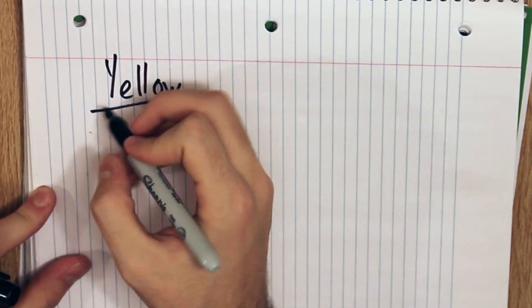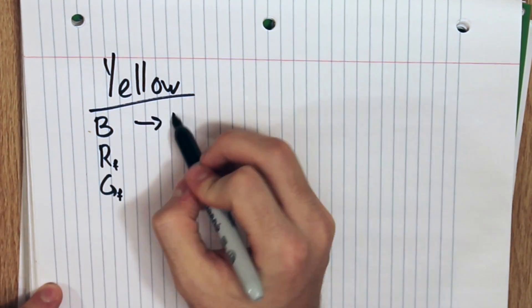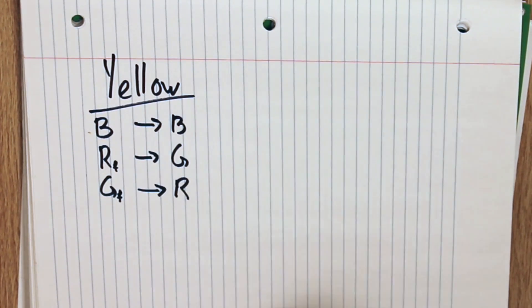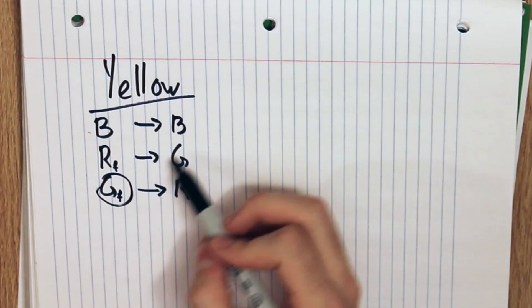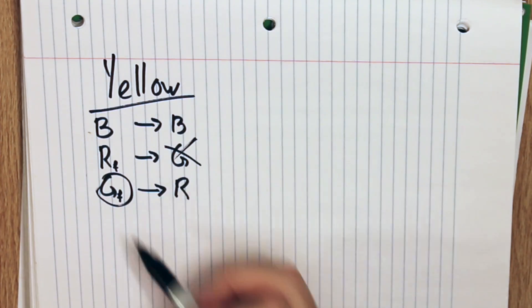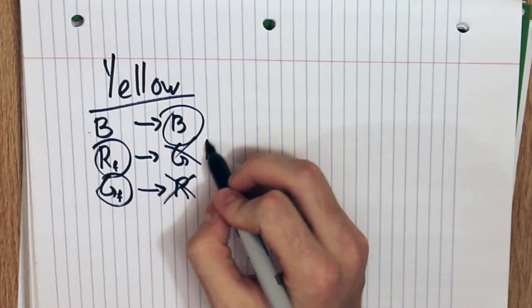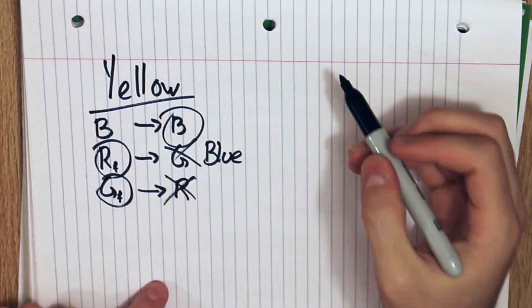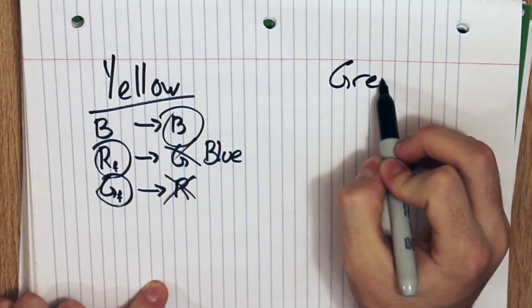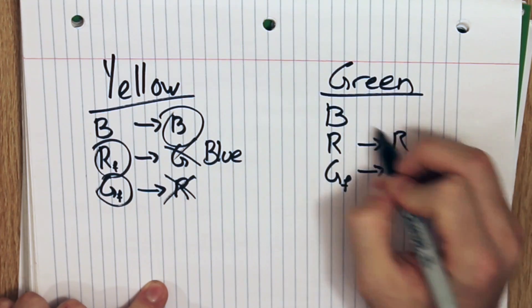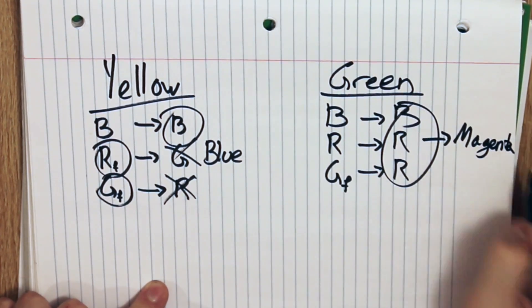We already got blue and red, so let's do green and yellow. Blue stays blue, red goes to green because that's its opponent pair, and green goes to red. Now blue, green, and red is white. But remember, green is fatigued and so is red, leaving us just with blue. And quickly for green: green is fatigued, goes to red, red is red, blue is blue — magenta.